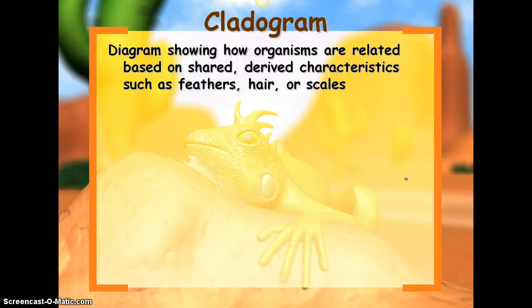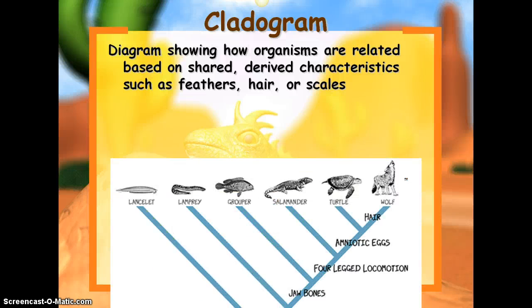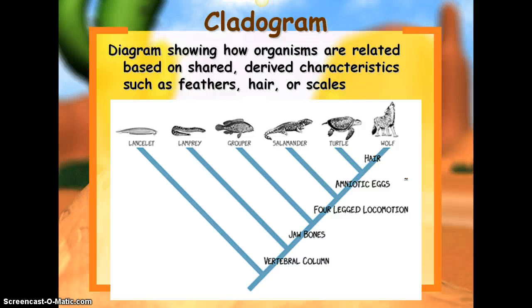A cladogram is a diagram that shows how organisms are related based on certain characteristics — things like feathers, hair, or scales. So we're looking at these shared characteristics and then showing our evolutionary tree based on those characteristics. Here's an example that you have in your notes packet as well — if you don't, you may want to draw it in.